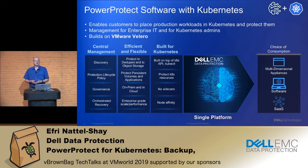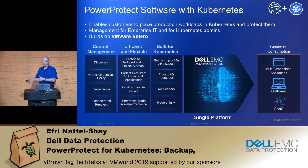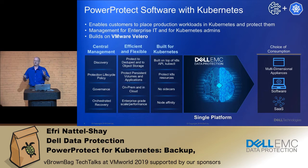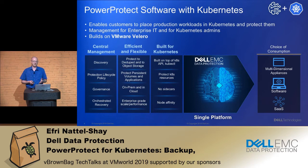The second pillar is flexibility. Most of our customers use Data Domain, or the newly announced X400 integrated appliance with software and backup target in one place. Other customers want to back up to S3. Some customers want to protect PVCs; others want to protect at the higher namespace level. We have customers working on-prem and customers that want on-prem and public cloud. There are a lot of varieties of Kubernetes distributions and volume types, and we want to allow our customers that flexibility for heterogeneous environment data protection.